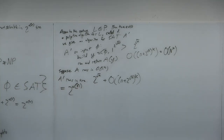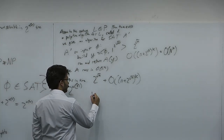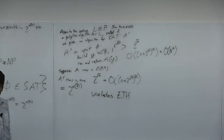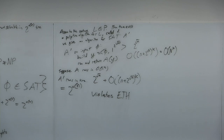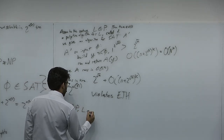If A' runs in time 2^(o(n)), the Exponential Time Hypothesis quite literally says SAT is not solvable in 2^(o(n)) time. So this violates ETH. We showed that if this algorithm were in P, then by a padding argument we could solve SAT too fast. Because we solved SAT too fast, we violated our assumption of ETH. So L can't be in P. We've now shown L is in NP and not in P.